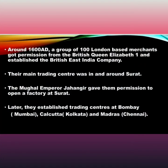Around 1680, a group of 100 London-based merchants got permission from the British Queen Elizabeth I and established the British East India Company. Their main trading centre was in and around Surat.